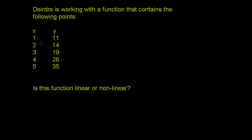If for each change in x — so over here, x is always changing by 1 — the change in y has to always be the same. If it's not, then we're dealing with a non-linear function, and we can actually show that by plotting it out. If the changes in x were going by different values, what you'd want to do is divide the change in y by the change in x, and that should always be a constant.